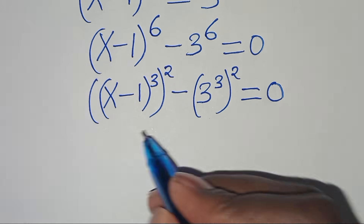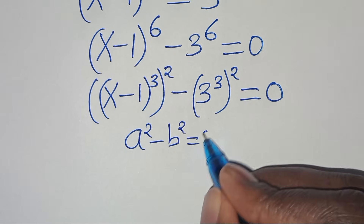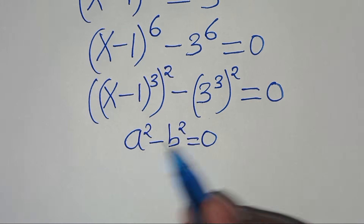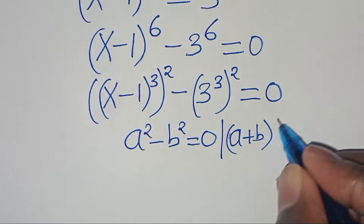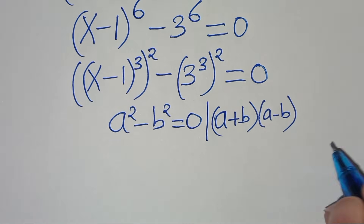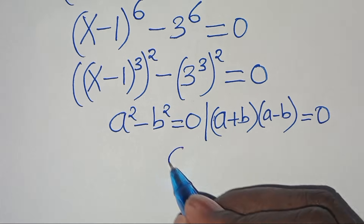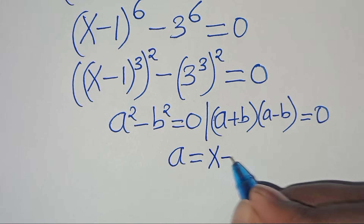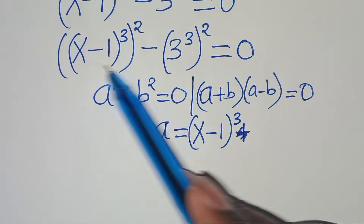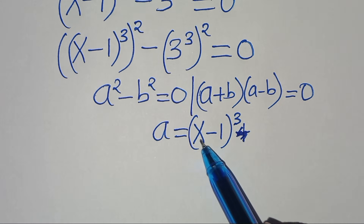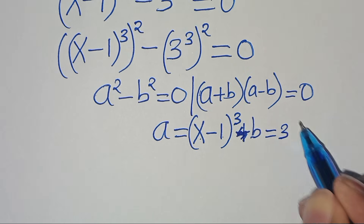This equation is of the form a squared minus b squared equals 0, which we can express as (a plus b)(a minus b) equals 0. Here, a equals (x minus 1)^3 and b equals 3^3.